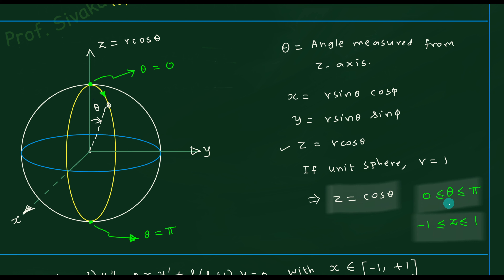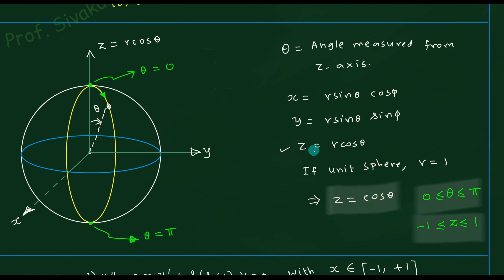Since θ varies from 0 to π, substituting into cos θ gives: cos 0 = 1 and cos π = −1. So equivalently you can say the Cartesian variable x = cos θ varies from −1 to +1. Now you understand that in the spherical polar coordinate system, when talking about the polar angle, the corresponding Cartesian variable is z — not x — and it ranges over [−1, 1].